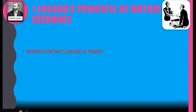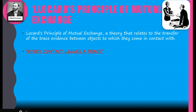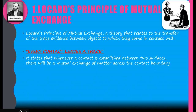The very first one is Locard's Principle of Mutual Exchange, which was proposed by Edmund Locard, and which states that every contact leaves a trace. The person's contact with any surface or any area definitely leaves a trace. This is a theory that relates to the transfer of trace evidences between objects which they come in contact with. If I touched any surface, then definitely I leave my fingerprint there, and also I will get some amount of dust from there. So there is some mutual exchange of things, evidences, and traces. Whenever a contact is established between two surfaces, there will be mutual exchange of matter across the contact boundary.